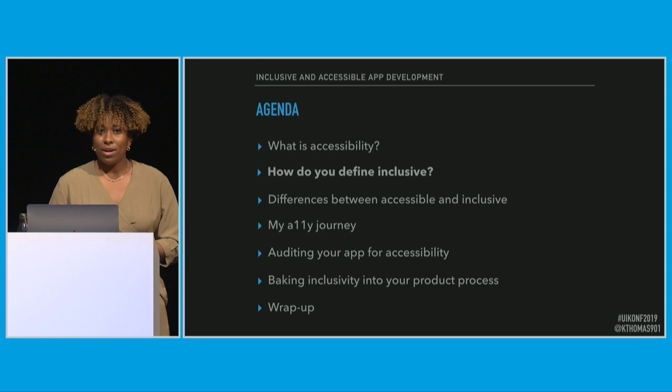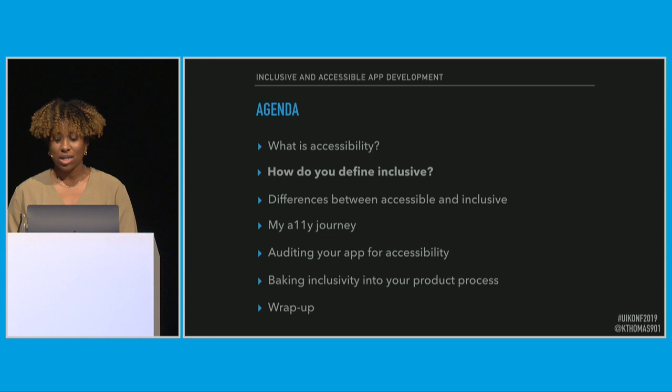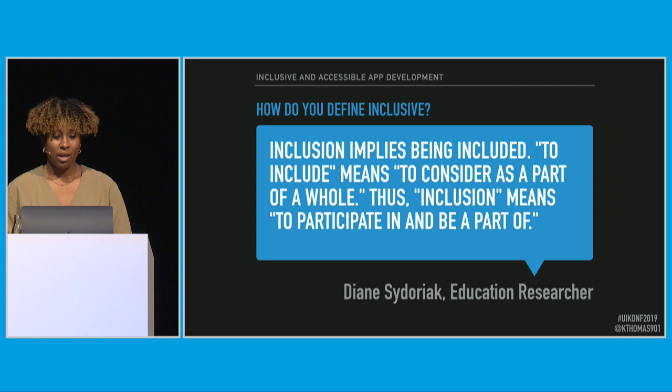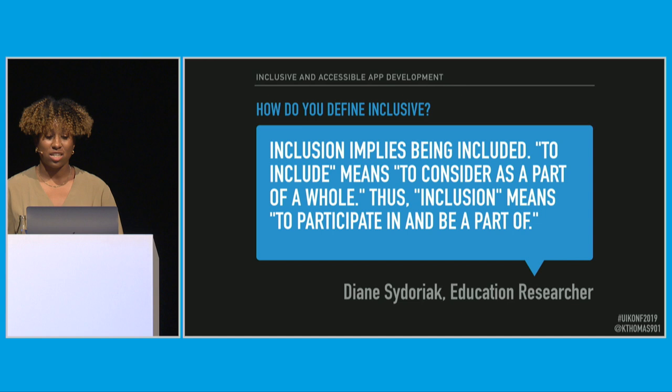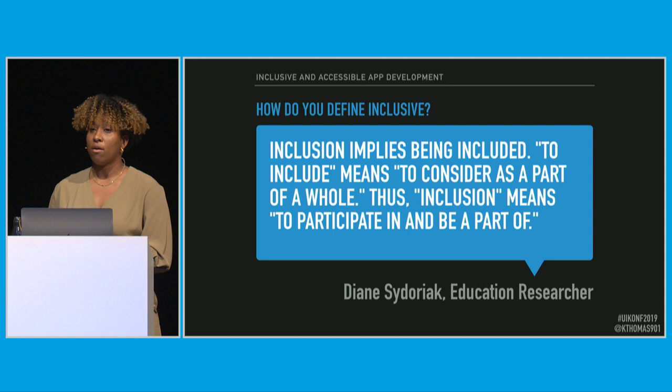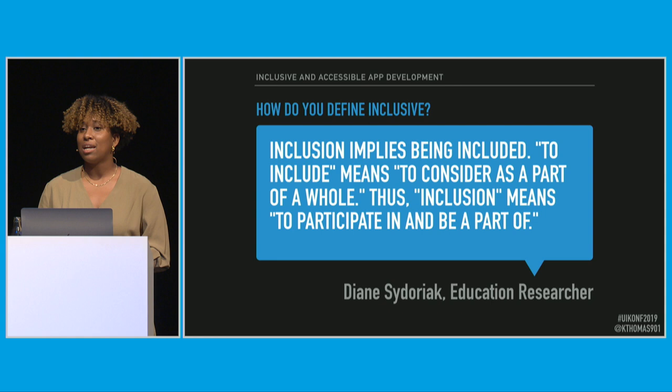Now I've defined accessibility, but how do you actually define inclusive? Because they're actually very different things. I love this definition by an education researcher: inclusion implies being included. To include means to consider as part of a whole. Thus, inclusion means to participate in and be a part of. So inclusion really is about welcoming someone in and recognizing that they deserve to have great experiences, regardless of whatever their background or life experience is.